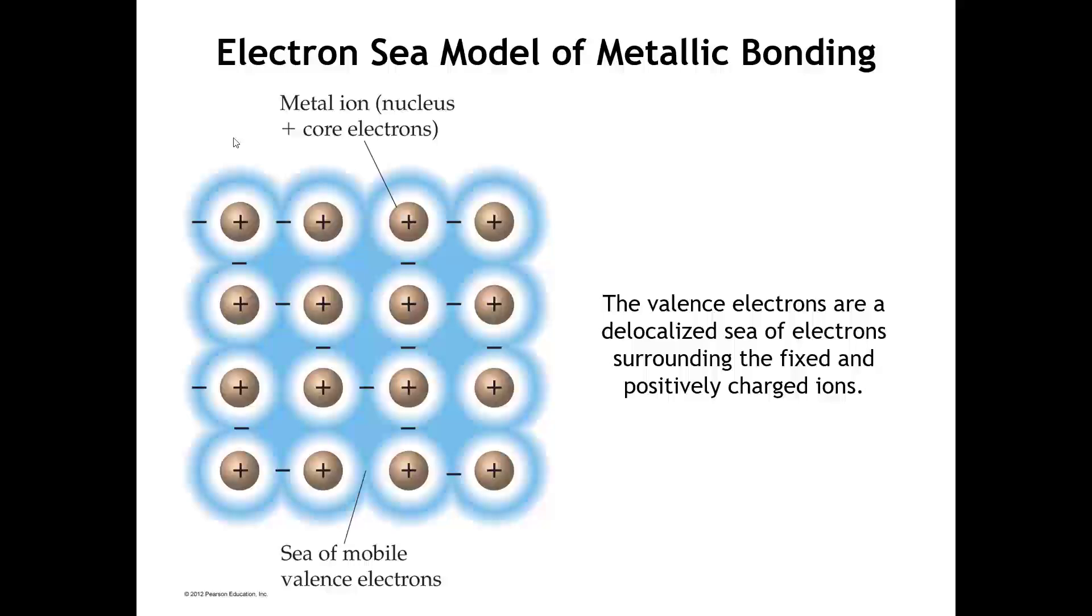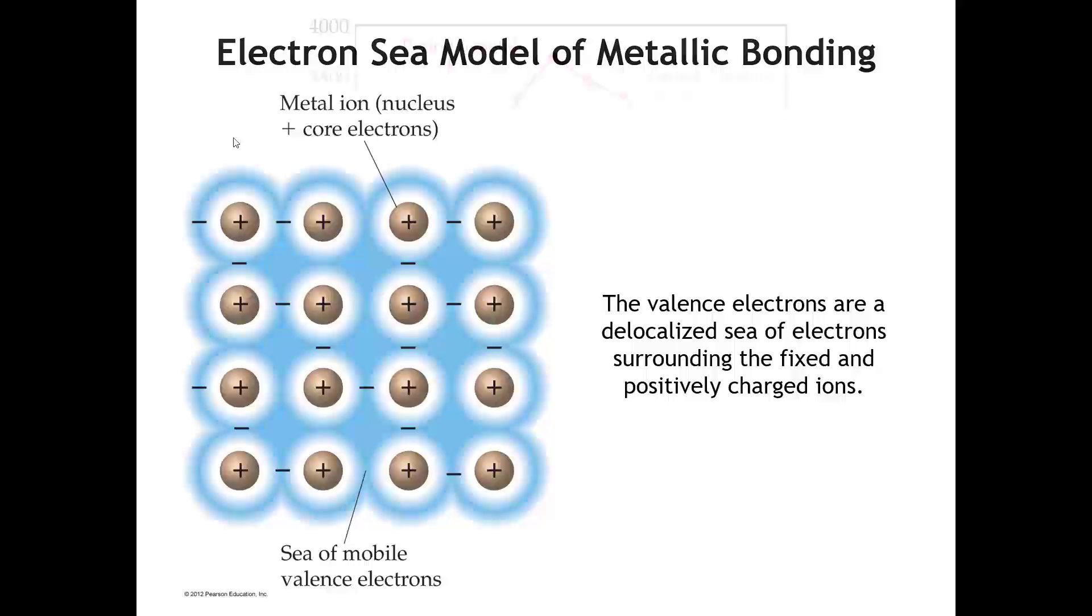Okay, but there are some limitations to the electron-sea model, because, of course, it is a very simple model. Now, in the electron-sea model, we would think that if the valence electrons are the glue which holds the atoms together, that the more valence electrons, the stronger the atoms will be held together. Let's take a look at the melting points of elemental metals and see if that's true.